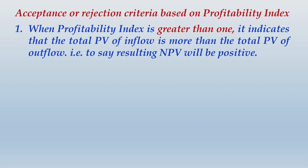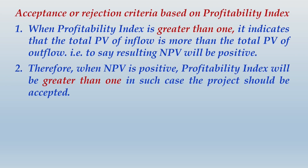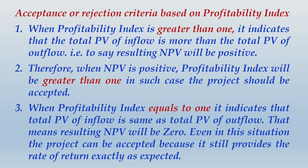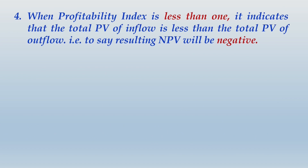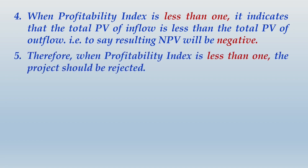Acceptance or rejection criteria based on profitability index: when PI is greater than 1, total PV of inflow exceeds total PV of outflow — NPV is positive — so accept the project. When PI equals 1, NPV is zero, but the project can still be accepted as it provides exactly the expected rate of return. When PI is less than 1, total PV of inflow is less than total PV of outflow — NPV is negative — so reject the project.